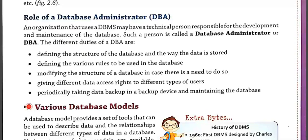The different types of duties or roles of a DBA are: it determines how the data is to be stored in the database and what is the structure of the database. It also describes and applies all the rules which have to be used in the database. If it is needed to change or update the design or structure of the database, then that is also done by the DBA only.